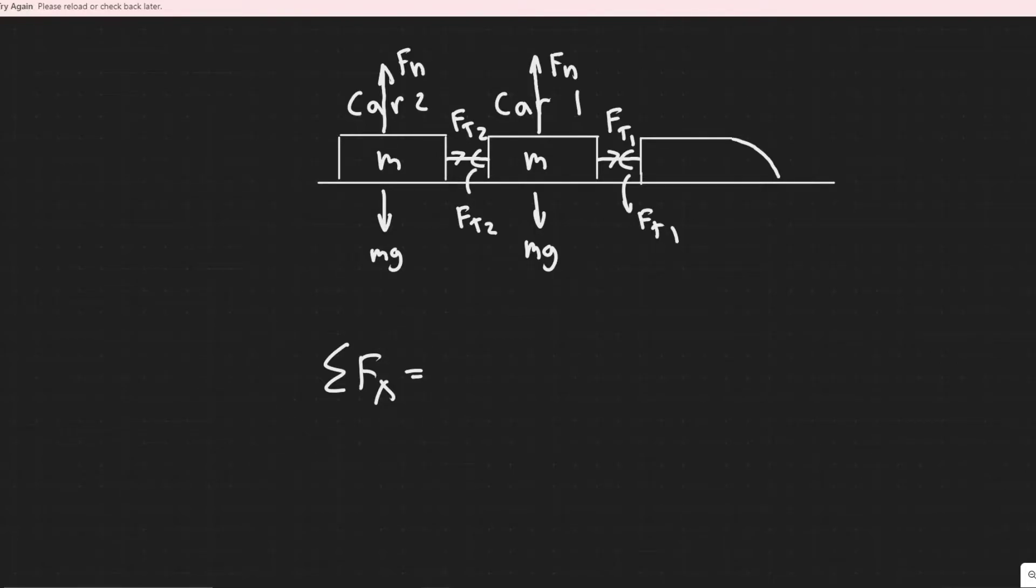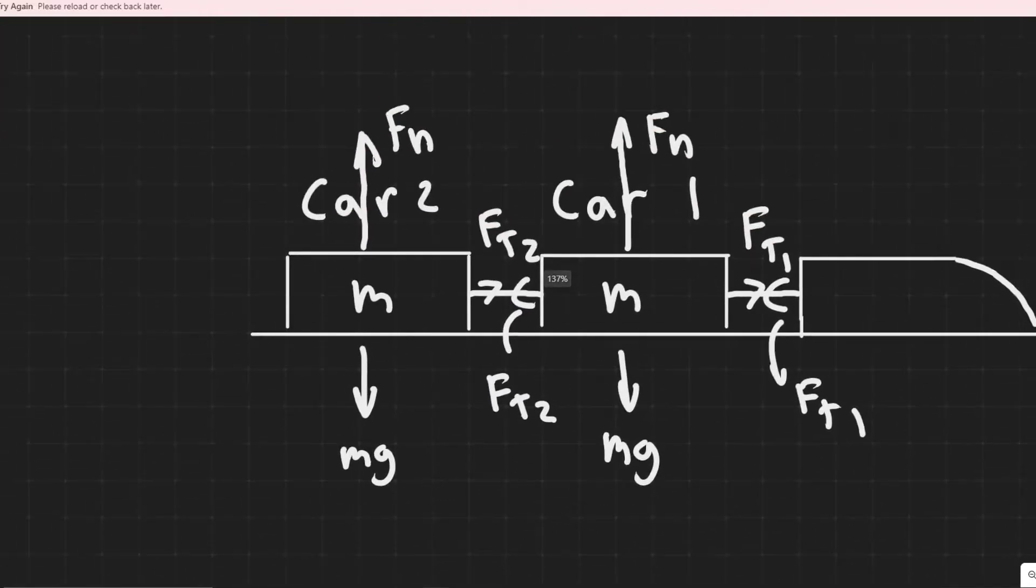If I sum the forces in the X on this car, we know sum of the forces equals MA. And then you just say MA equals sum of the forces in the X. So when I'm referring to the X, I'm obviously just talking about everything along this here. Notice for car 2, the only force we have here is Ft2.